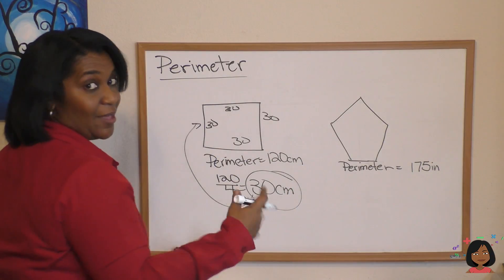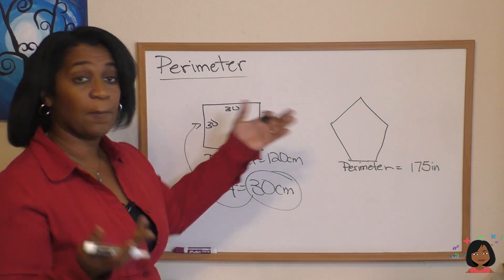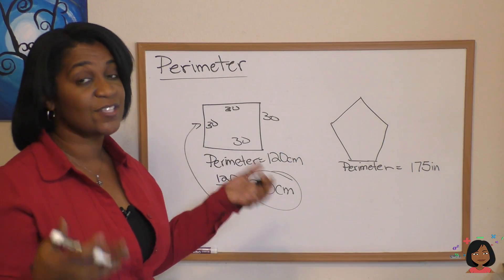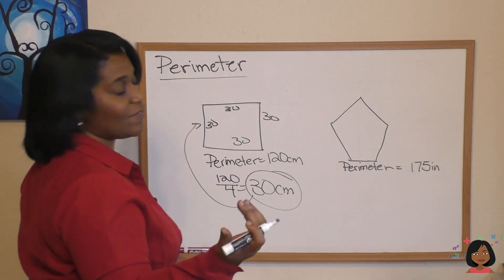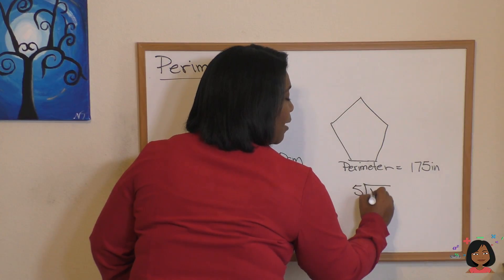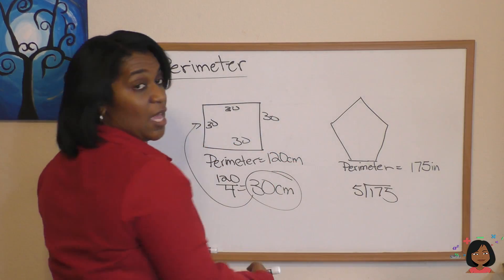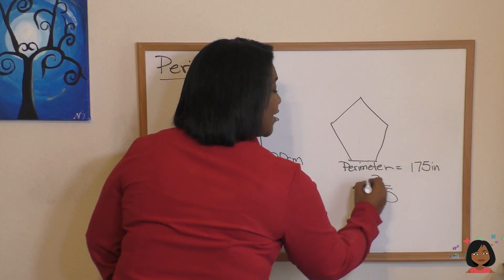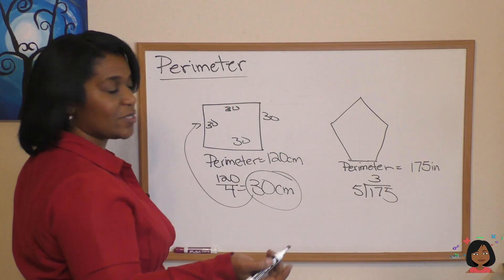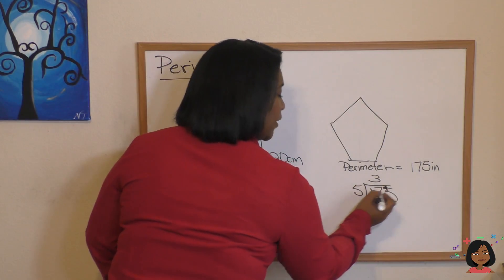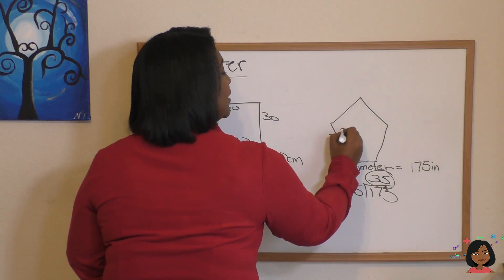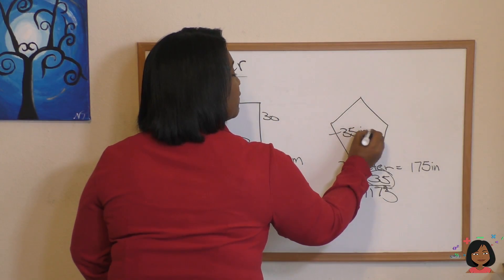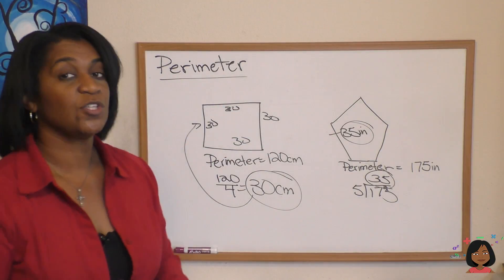We can do it with non-squares. How about a pentagon? It has 5 sides, 5 equal sides—that's the key—and they told us it's 175 inches. Now again, it's a division problem, so we can do it like this and just do our math: 5 times 3 is 15, 2 is left over, 5 and 25 is 5. So that means that each side is 35 inches.